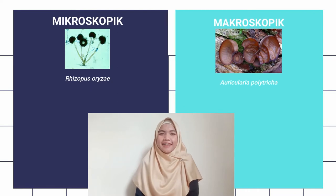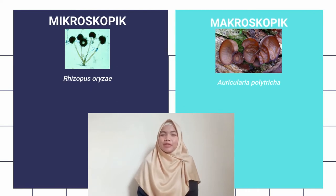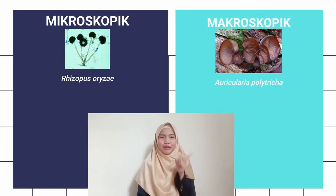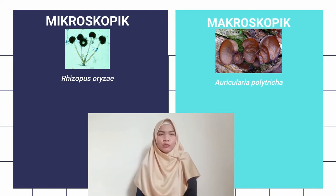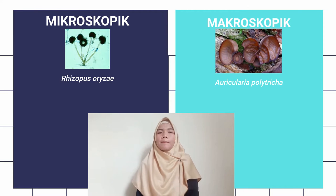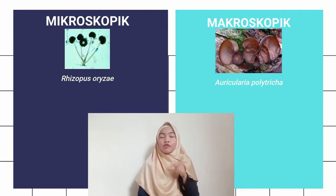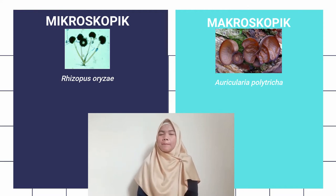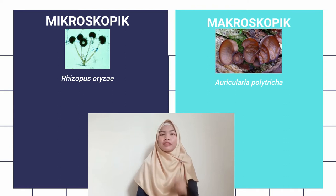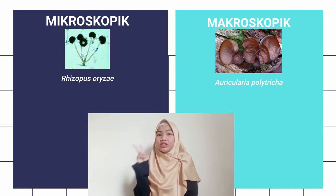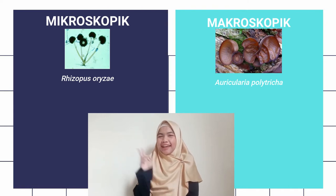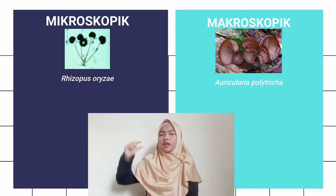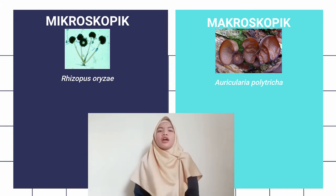Sekarang kita masuk ke karakteristik yang pertama, yaitu perbedaan jamur berdasarkan jenis ukurannya. Pada jamur terdapat dua jenis ukuran: ada yang mikroskopik dan ada yang makroskopik.